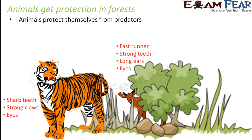Now let us look at the adaptations of the deer. The deer is a fast runner, which helps it escape from predators quickly. Its strong teeth help it chew plant parts, since deer are herbivores that mostly feed on plants. The deer also has long, sensitive ears that can detect even the slightest sound, helping it hear the footsteps of approaching predators well in advance.